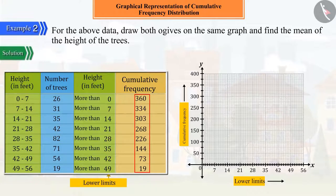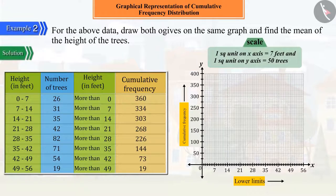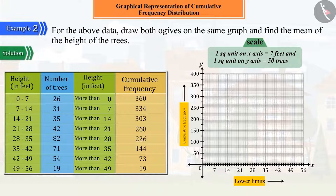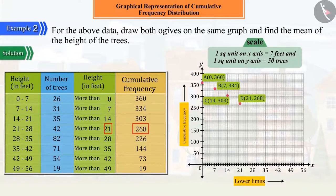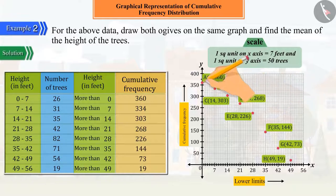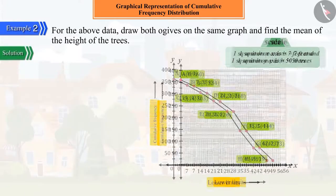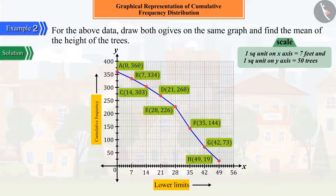Where 0 to 49 are the lower limits of the corresponding class intervals. To represent these obtained data graphically, mark the lower limits on the x-axis and cumulative frequencies on the y-axis. Plot the corresponding points of ordered pairs a, b, c, d, e, f, g, and h obtained from the lower limits and corresponding cumulative frequencies, and carefully join all these points, from which we get a curve called the more-than type of ogive.